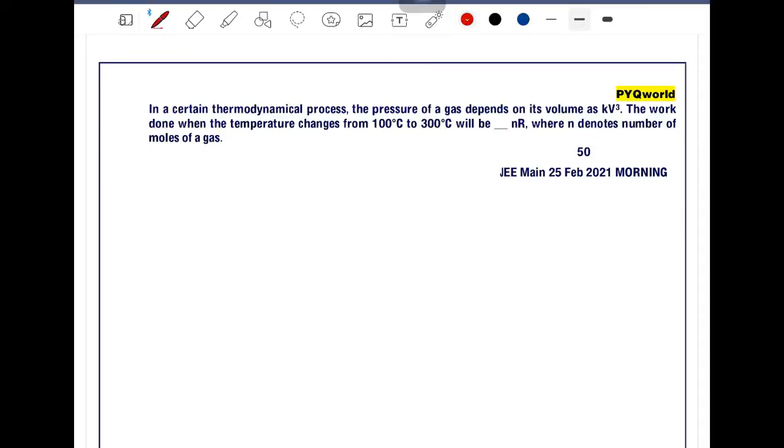In a certain thermodynamical process, the pressure of gas depends on volume as P = kV³. The work done when the temperature changes from ΔT = 200°C will be nR, where n denotes the number of moles of gas. How to find work done?